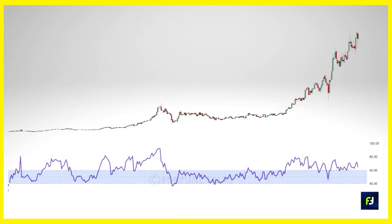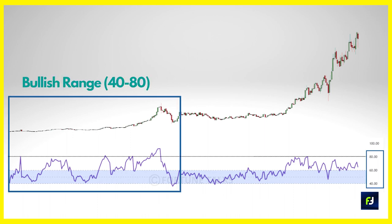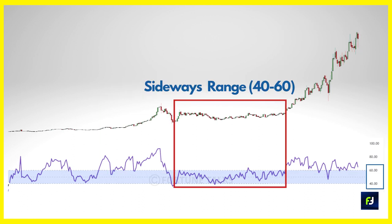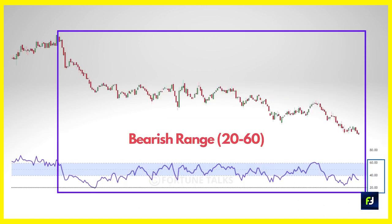Looking at a chart to understand bullish, super bullish, and sideways ranges: the bullish range is shown with a blue box where RSI oscillates between 40 and 80. Whenever RSI touches the 80 zone, price tends to slow its momentum and turn down. The super bullish range shown in green has RSI oscillating between 60 and 80, during which the stock gives a strong up move. The sideways market shown in a red box has RSI oscillating between 40 and 60-65, where the stock moves sideways and traders can witness a lot of whipsaws.